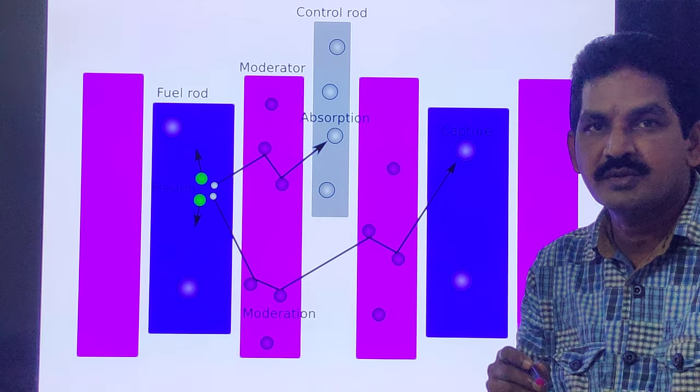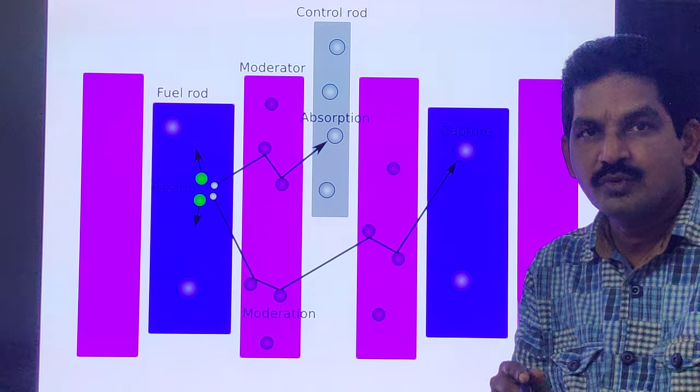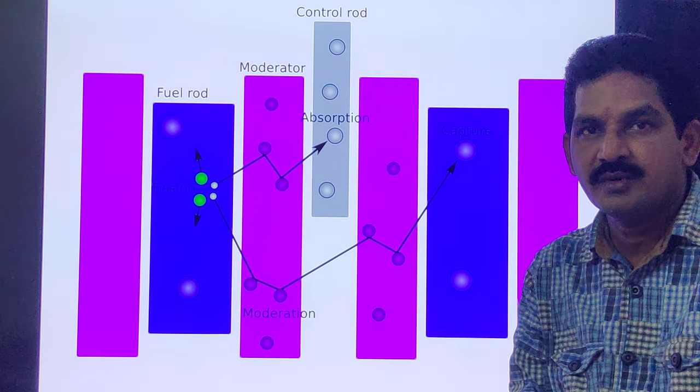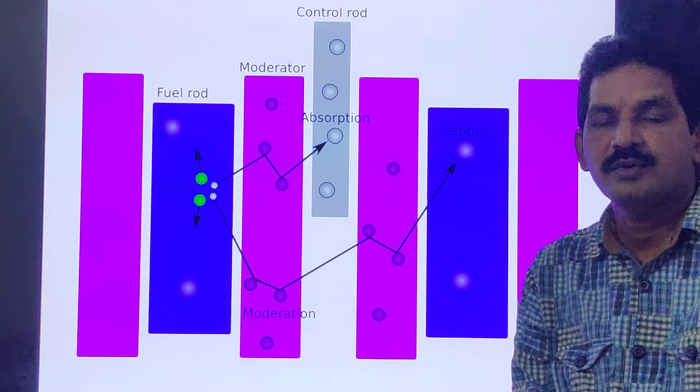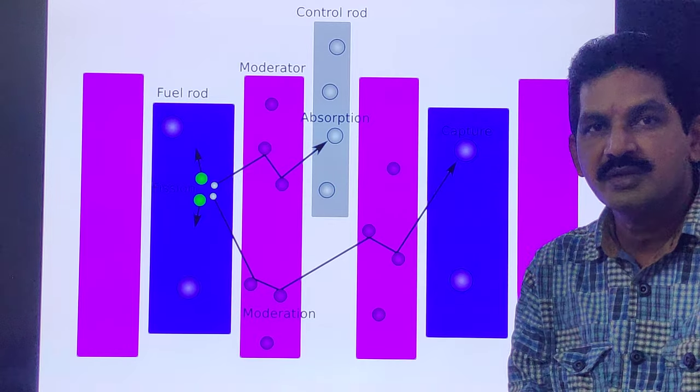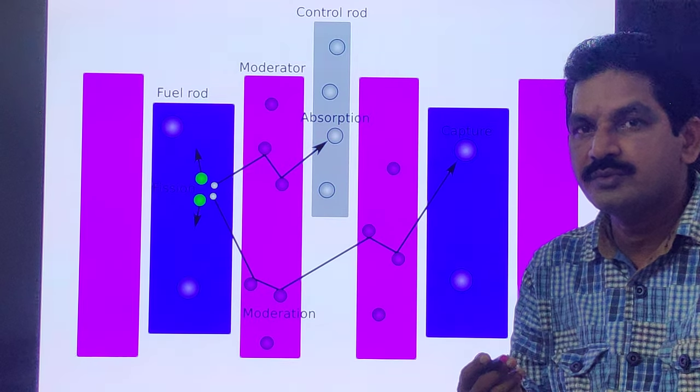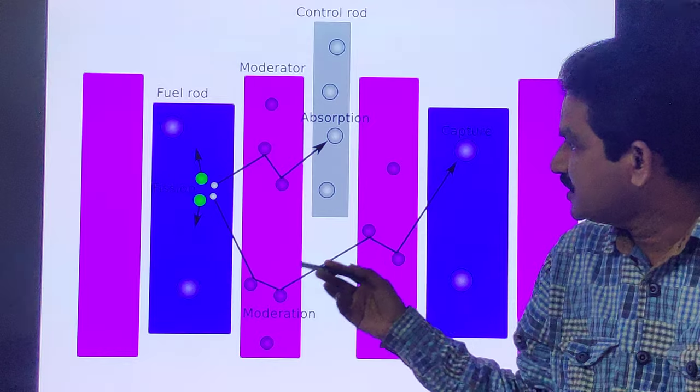Such losses are minimized by surrounding the reactor core with material called reflector, which will reflect the neutrons back to the core. They improve the neutron economy and the economy graphite and beryllium.